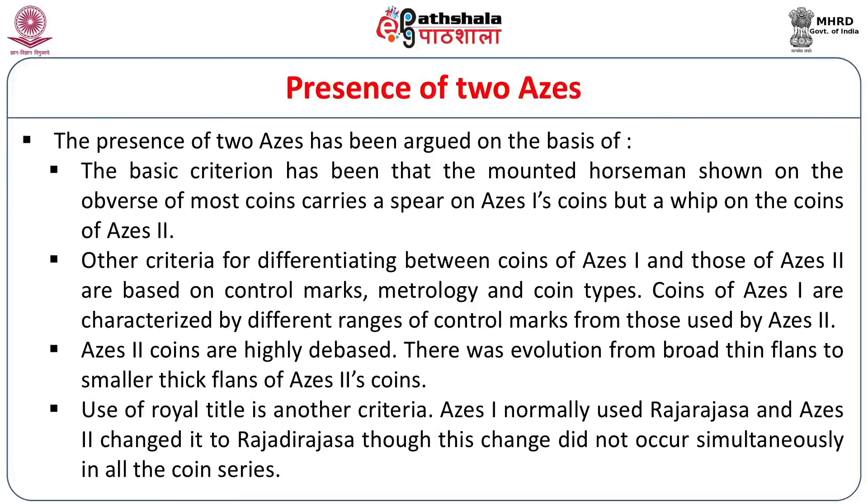Finally, Aegis I used the title 'Rajo Rajo' in general, whereas Aegis II used 'Rajatirajo.' These are different markers, though we must remember it was not happening simultaneously in all coins. The joint rulership sequence was: first coins of Aegis I on the obverse with Aegis I's name on the reverse, then Aegis I ruling independently, then Aegis II, then Aegis II ruling with the Kshatrapa ruler.